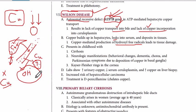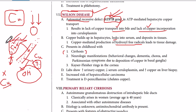The first organ obviously affected is the liver, because we have excess accumulation of copper there. Generation of hydroxyl free radicals damages the hepatocytes. When the normal parenchyma and stem cells are damaged, normal cells are replaced by fibers — which is called fibrosis, also called cirrhosis. So we have cirrhosis of the liver.